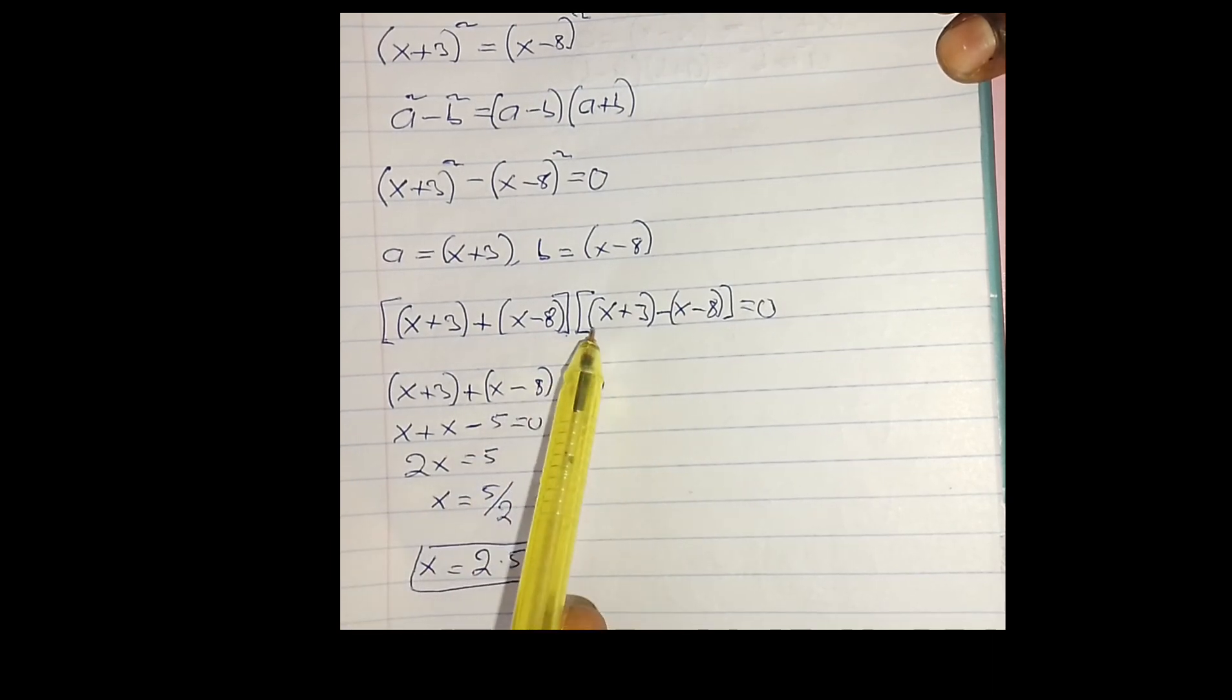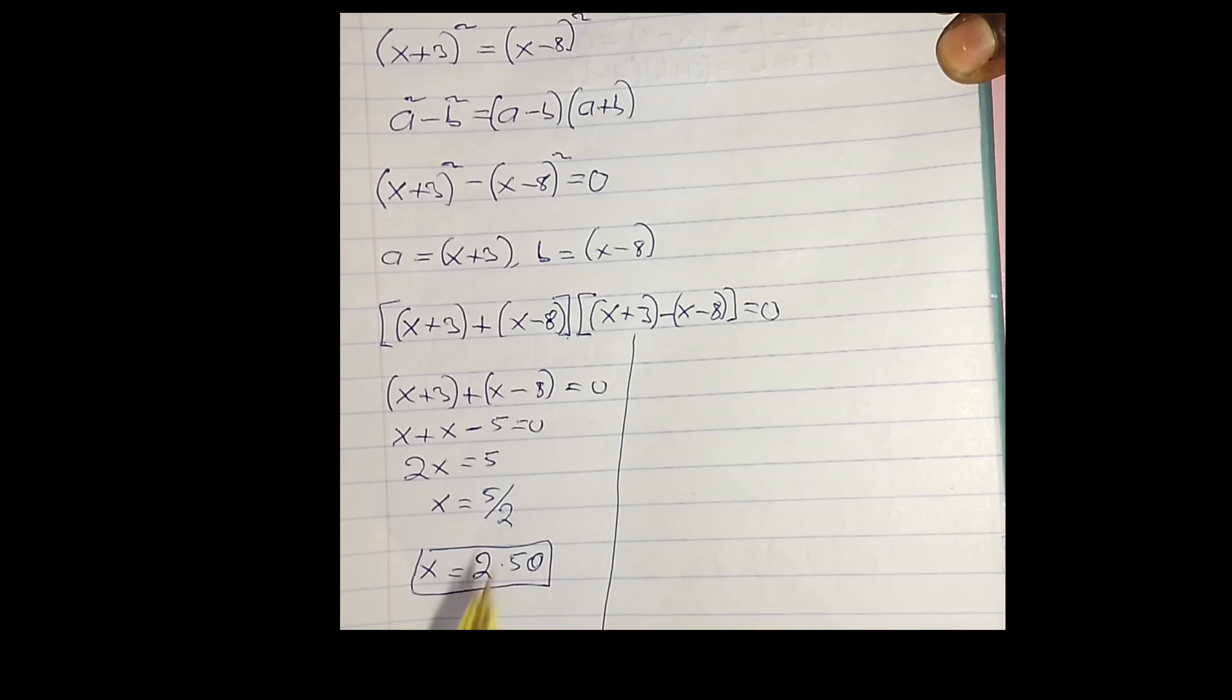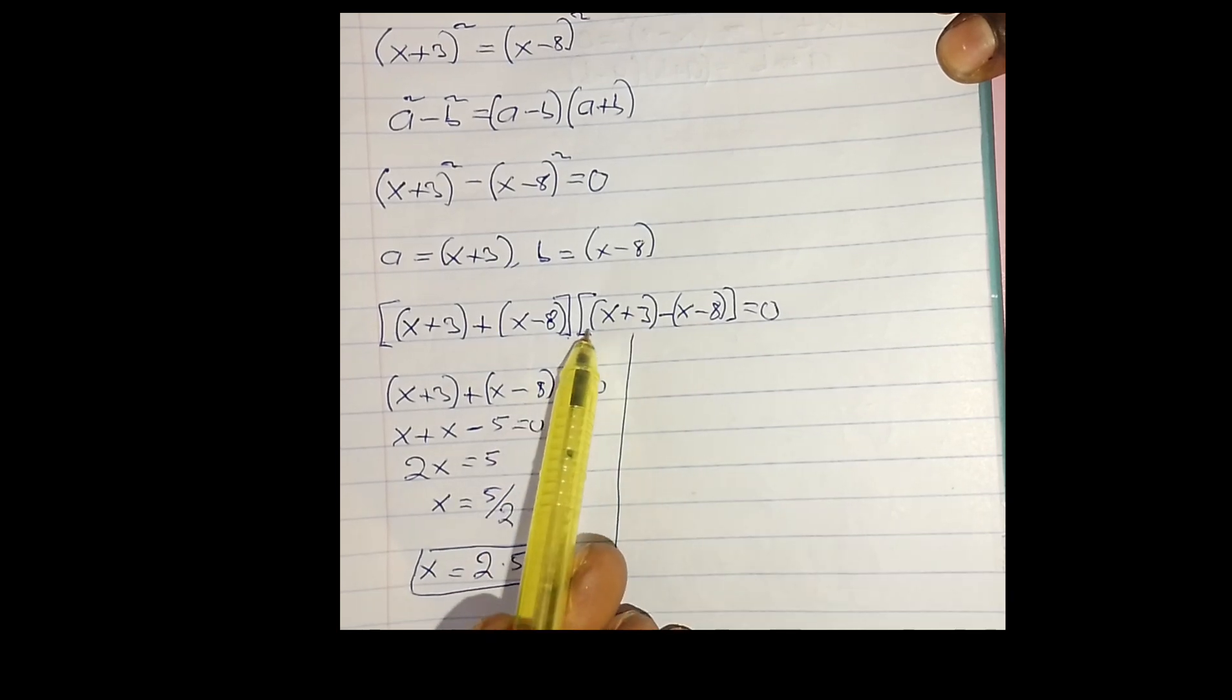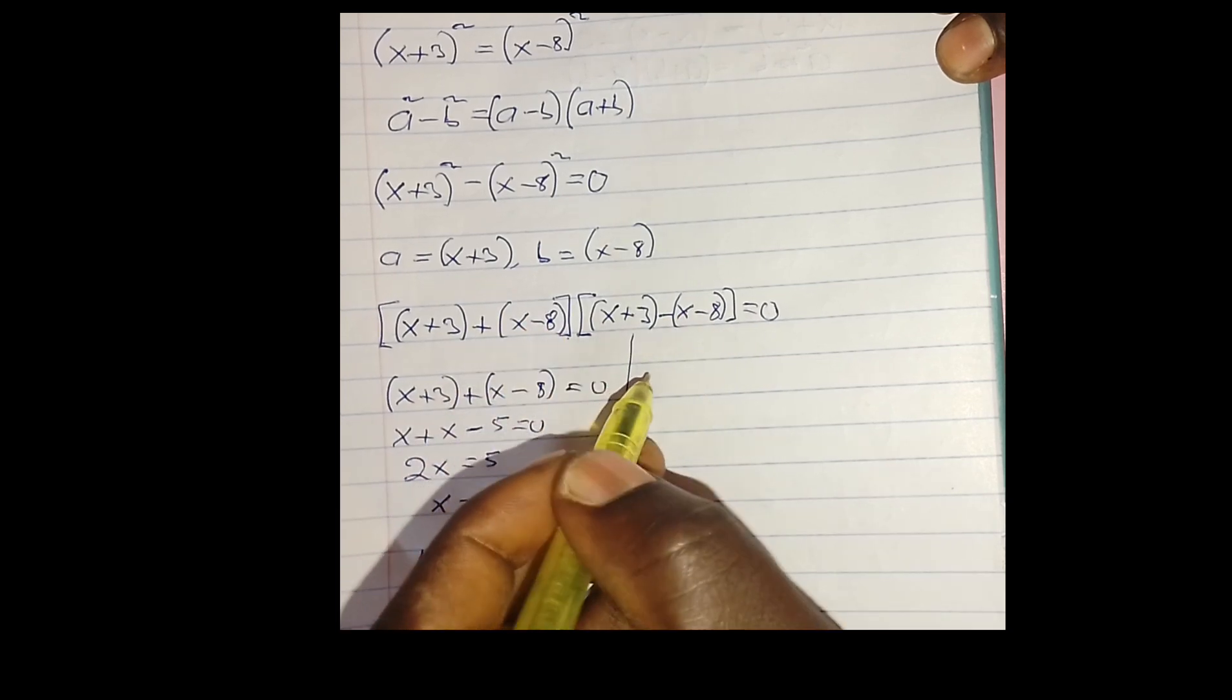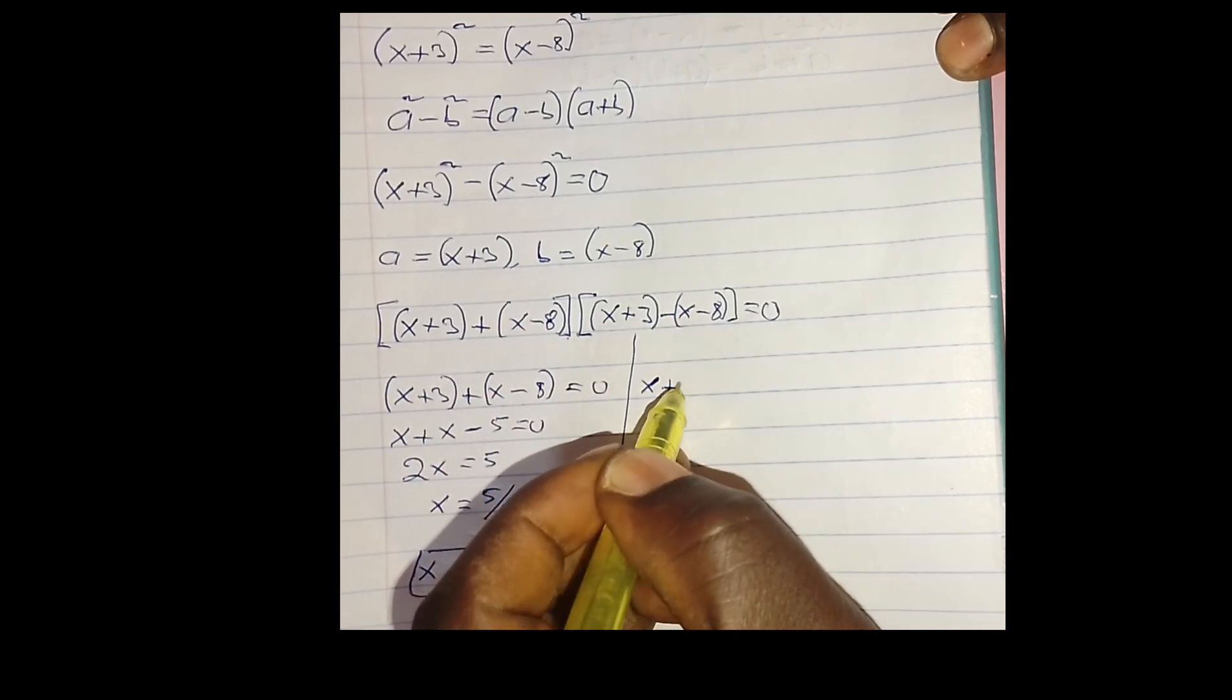When we consider the second bracket, let me draw a line. When we consider the second big bracket, we have (x + 3) - (x - 8), so we get x + 3 - x + 8 = 0.